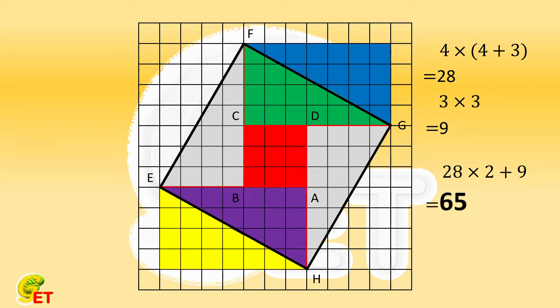That is the answer, and we make it. But now, let's discuss something more. Please take a look at one of the four triangles. It is a right triangle, and its two legs are 4 and 4 plus 3, respectively.